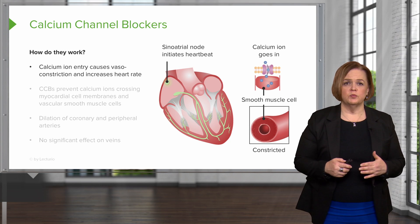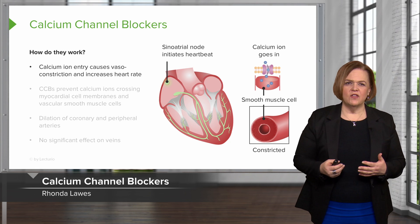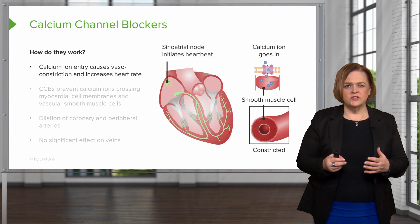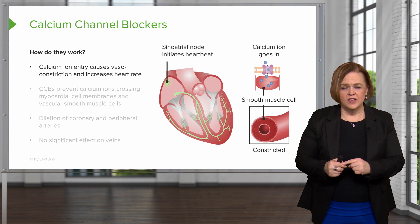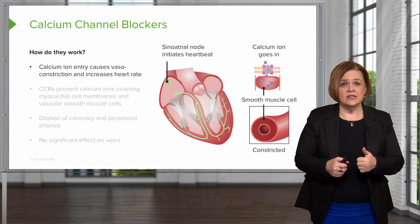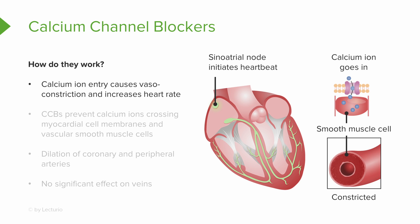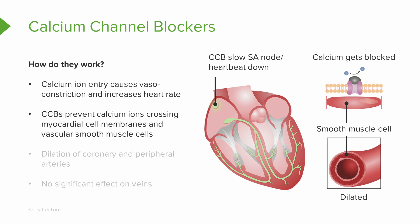We're talking about calcium channel blockers in this video. Calcium ion entry causes vasoconstriction and increases the heart rate, so if you let the calcium go across that channel, you're going to end up with vasoconstriction and increased heart rate. If we give a calcium channel blocker, we stop that calcium movement, so we'll have less vasoconstriction and a slower heart rate. Both of those give us a lower blood pressure. They block calcium from crossing the myocardial cell membranes and the vascular smooth muscle cells, so we have less vasoconstriction and a lower heart rate.